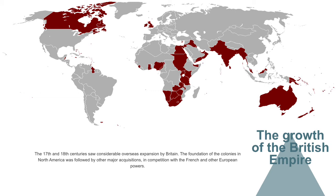The 17th and 18th centuries saw considerable overseas expansion by Britain. The foundation of colonies in North America was followed by other major acquisitions in competition with the French and other European powers. Despite the North American colonies winning the War of Independence between 1775 and 1783, Britain continued to extend its rule through the 19th century over a large part of the world, a process from which the modern Commonwealth eventually emerged.